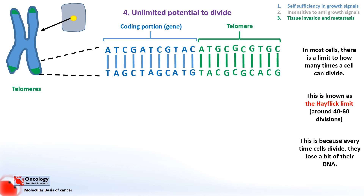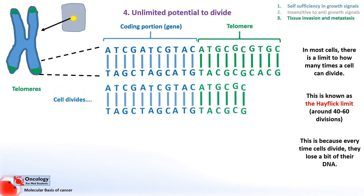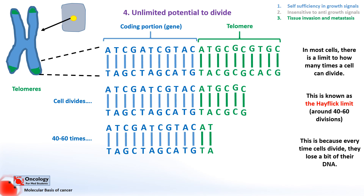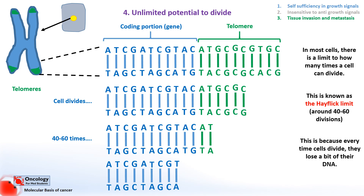When a cell divides it can't copy every bit of its DNA. This is due to the way the enzymes involved in copying DNA work. Because chromosomes have telomeres, the DNA that isn't coding for a protein at the end is the bit of DNA that's lost, and not the important bits that code for proteins. If the telomeres disappeared, the coding sections would start to disappear as well, leading to the production of faulty proteins. Usually at this point a cell will activate processes that cause it to self-destruct rather than carry on dividing with unstable DNA.